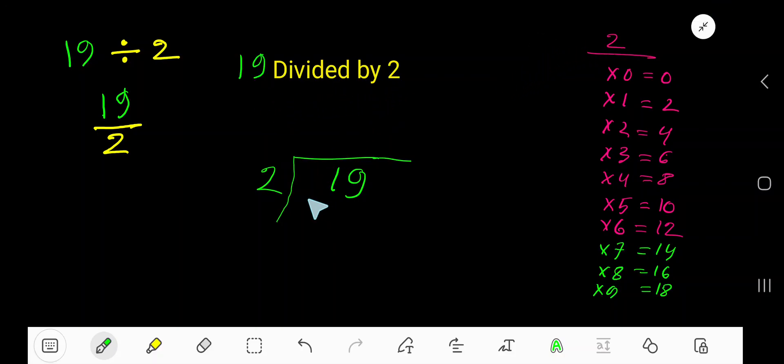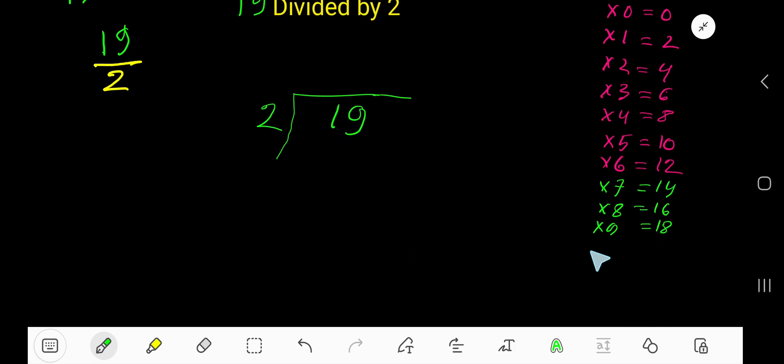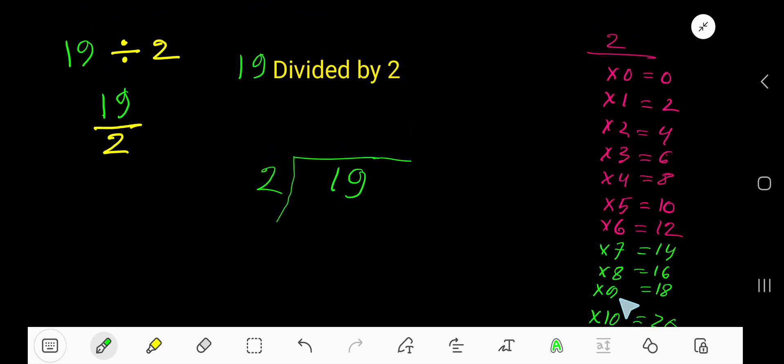19 divided by 2, so 2 goes into 19 how many times? 9 times 18, then 10 times equal to what? Just add 2 with the previous step: 18 plus 2 equals 20. 20 is greater than 19, so it is okay. 2 times 9.